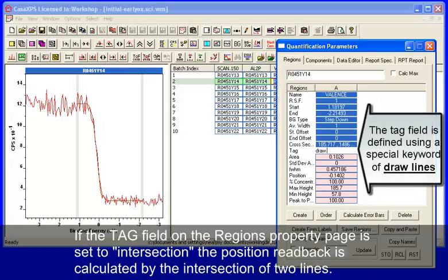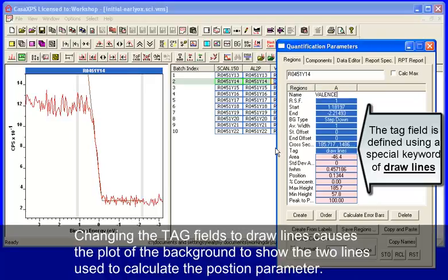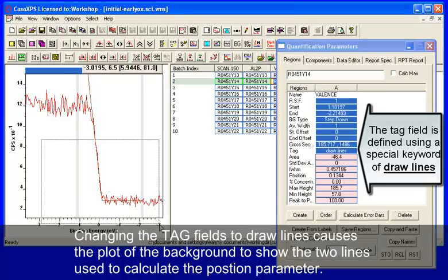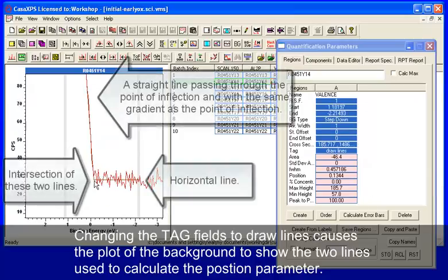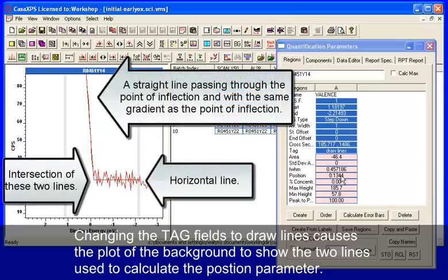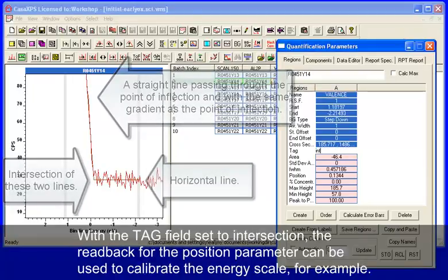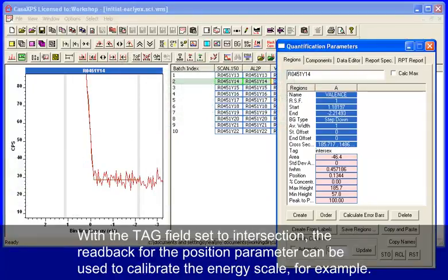So we can see where the intersection occurs. Having obtained this intersection of these two lines, which represent the position for the error function, we can then use this to calibrate a set of spectra.